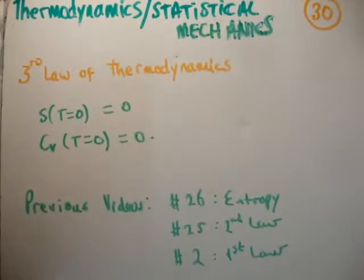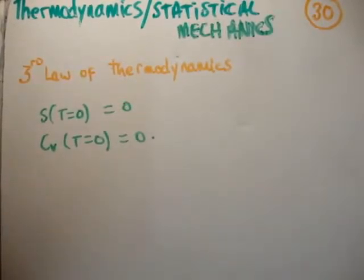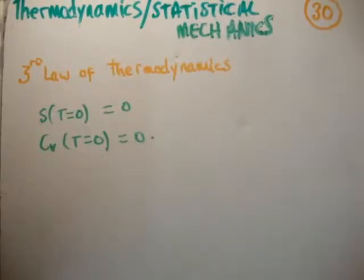I'd advise you to look at those, or at least have an understanding of them, before you look at this particular video. So the bottom line up front: What is the third law of thermodynamics? It says that at 0 Kelvin, or T equals 0, the entropy is 0, and so is the heat capacity at constant volume. There are two equivalent ways of saying the third law of thermodynamics.